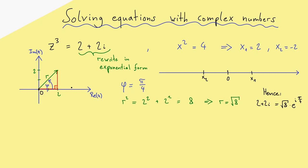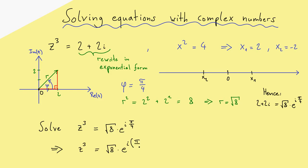Now we can solve our equation. We still have z cubed, but the right hand side is now much easier. The key advice is to rephrase the right hand side using the fact that we don't change a complex number if we add a full turn — that is, add 2pi to the angle. Since a full circle brings us back to the same point, we can also add 2 turns, 3 turns, and so on. In short, we can add k times 2pi for any integer k.